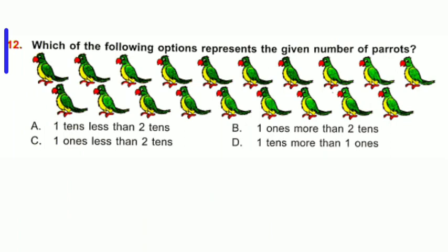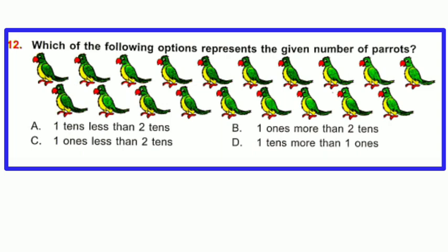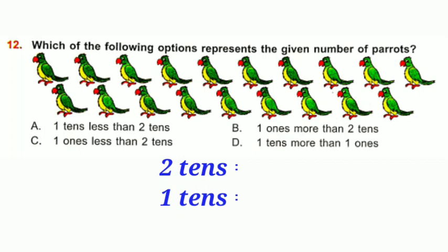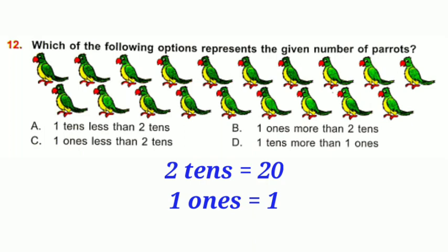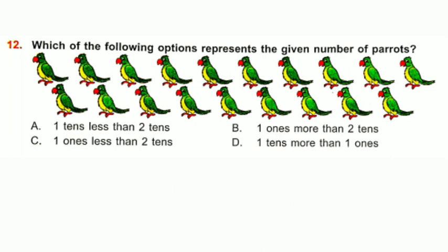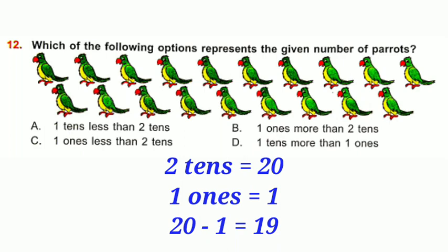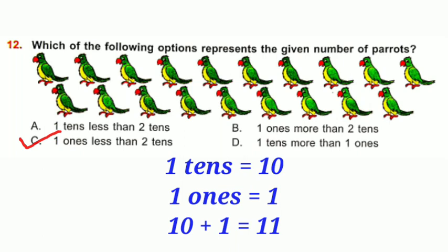Question number 12: Which of the following options represents the given number pattern? Counting the number of patterns, the total is 19. Option A: 1 ten less than 2 tens = 20 − 10 = 10. Option B: 1 one more than 2 tens = 20 + 1 = 21. Option C: 1 one less than 2 tens = 20 − 1 = 19. So, option C is correct. Option D: 1 ten more than 1 one = 10 + 1 = 11.